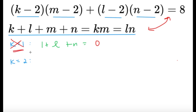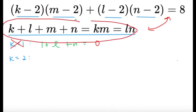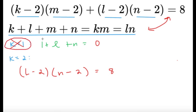A similar proof follows for any variable equaling 1. Now let's try K equals 2. If K equals 2, the term (K minus 2)(M minus 2) vanishes, so we're just dealing with (L minus 2)(N minus 2) equals 8. We also confirmed that L and N cannot equal 1, and if either equals 2 we'd get 0 equals 8 — impossible. So L and N are both greater than or equal to 3, meaning both (L minus 2) and (N minus 2) are positive.